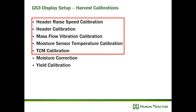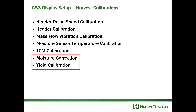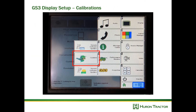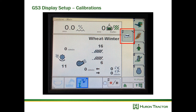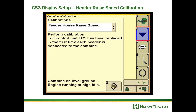The critical calibrations include: header raise speed calibration, header calibration, mass flow vibration calibration, moisture sensor temperature calibration, TCM calibration, and finally moisture correction and yield calibration. To get started, select the combine icon, then select the diagnostics icon, then select the calibration button on the right-hand side, and we're going to go through the calibrations list.